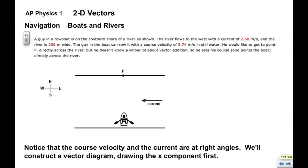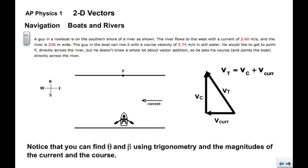We're going to construct a vector diagram. We're going to draw the x component first, which is the current. So the current is to the west. The course is to the north. And again, your common sense would tell you that the boat is going to go to the left and up. So this is the track velocity. He's actually not going to go straight across. He's going to go off in this direction here.